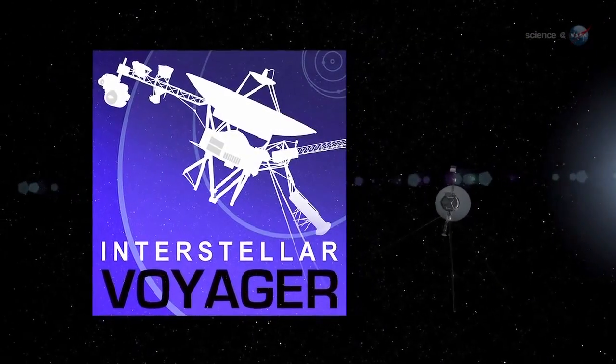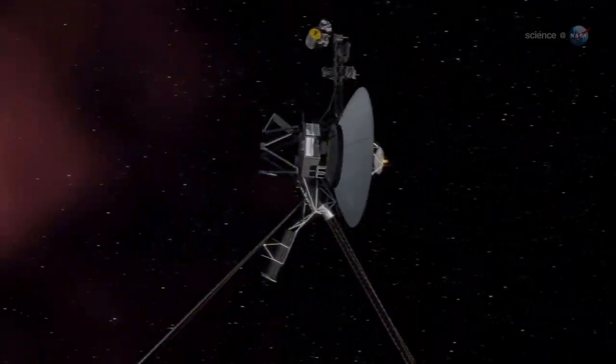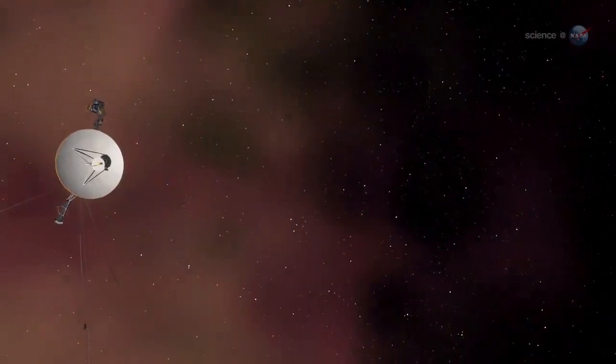When NASA sent the Voyager probes to find the edge of the Sun's magnetic field, it took them nearly 40 years to get there. Turns out, that's nothing.